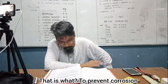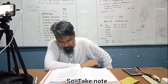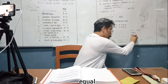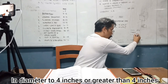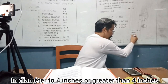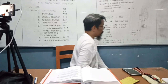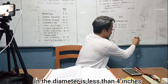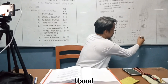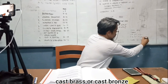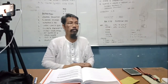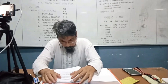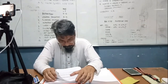Take note: if the pipe diameter is equal to or greater than four inches, the material used is cast iron. If the diameter is less than four inches, use cast brass or cast bronze material.